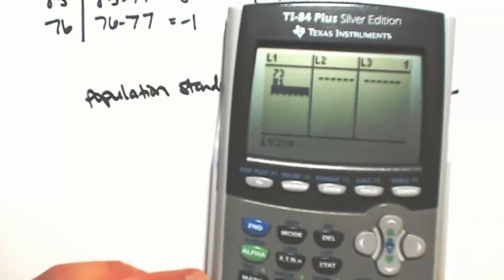So 73, 81, 70, 85, 76. Hit that stat button again.